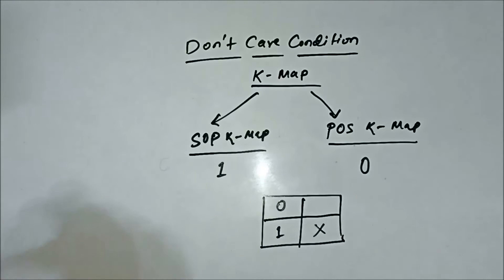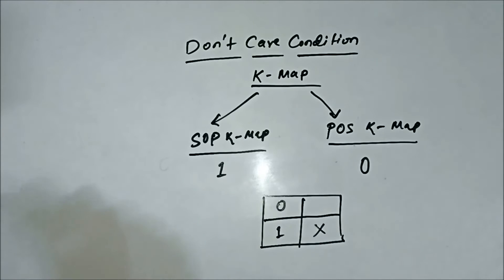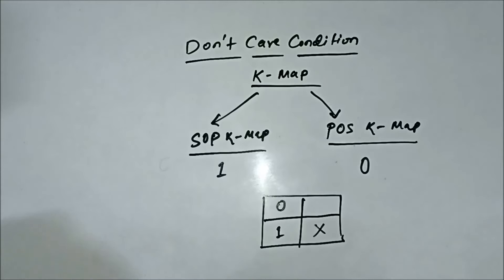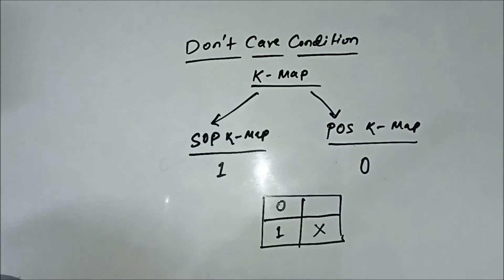For now, understand that the don't care condition generally deals with input combinations which are not allowed — which are forbidden. In that case, the output is neither 1 nor 0, and the don't care condition is represented by marking that particular cell as X. We mark the respective cells for a particular input combination where the output is not specified as X.